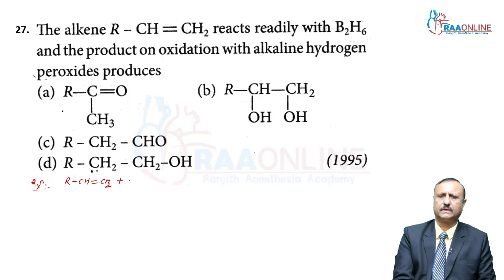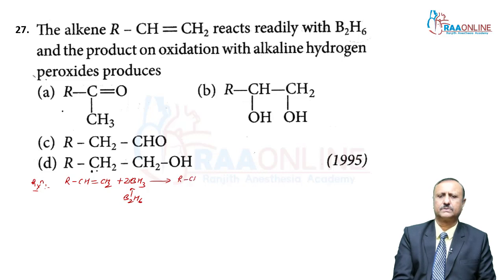Diborane (B₂H₆) gives two moles of BH₃. One mole of BH₃ adds a hydrogen ion to the alkene, forming RCH₂–CH₂–BH₂ via anti-Markovnikov addition. The hydrogen atom from BH₃ adds to the CH₂ group, giving RCH₂–CH₂–BH₂.